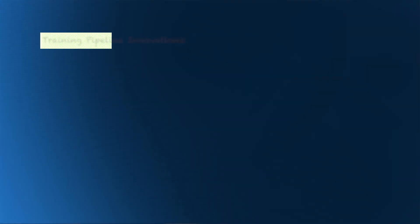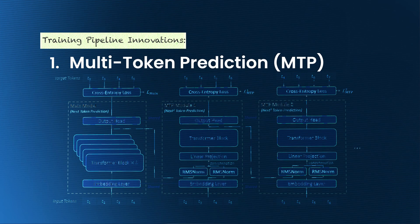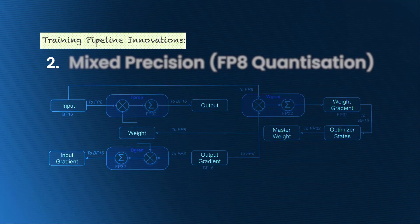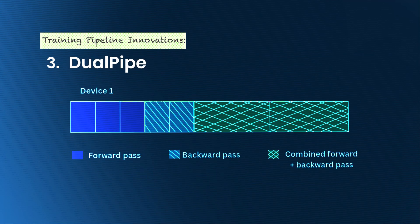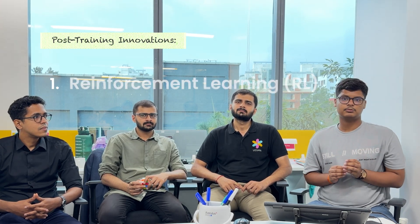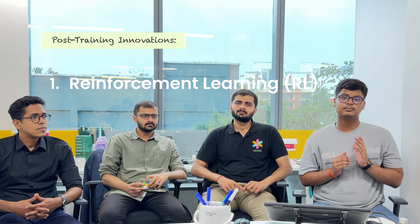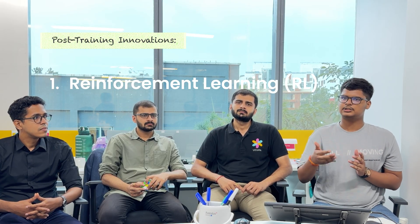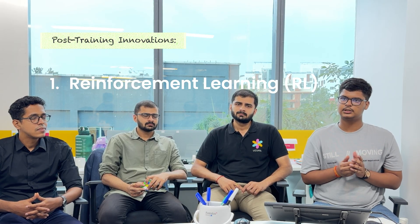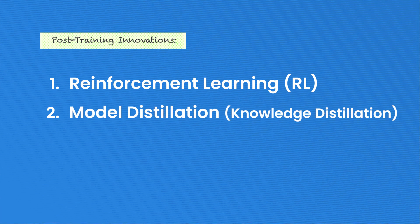The third part of architectural innovation is the training pipeline, which consists of MTP multi-token prediction, the mixed-precision framework with FP8 quantization, and a dual pipeline. Then we finally have the post-training pipeline — this is where we have the hottest topic: reinforcement learning. They show how reinforcement learning can be utilized in the post-training of large language models.